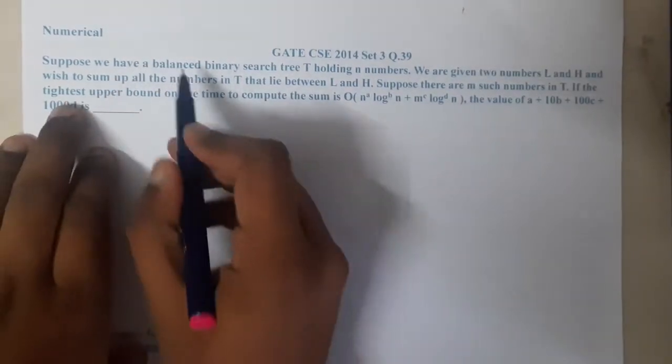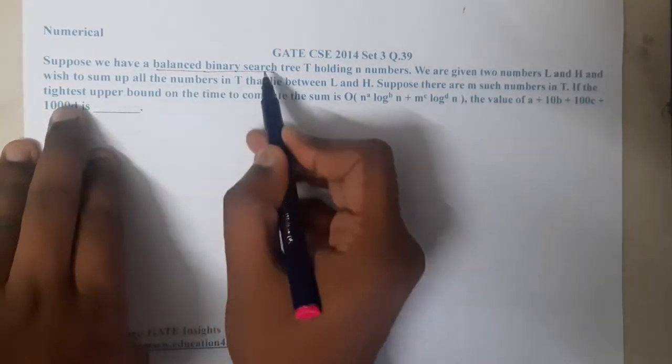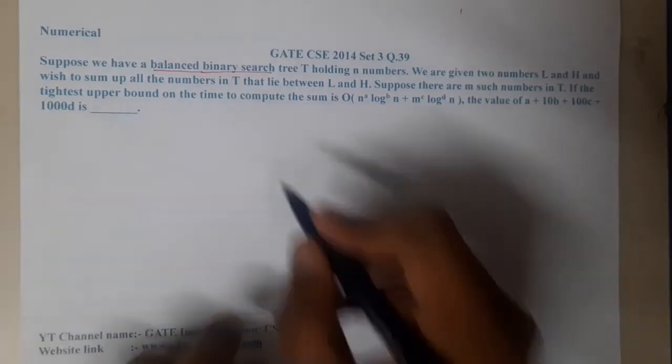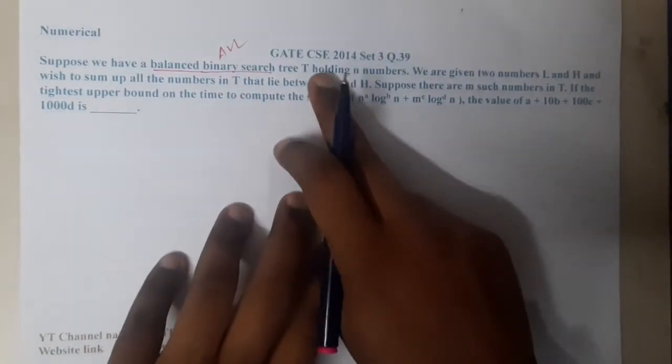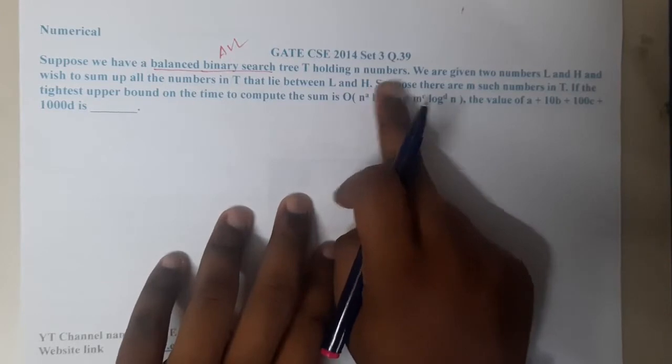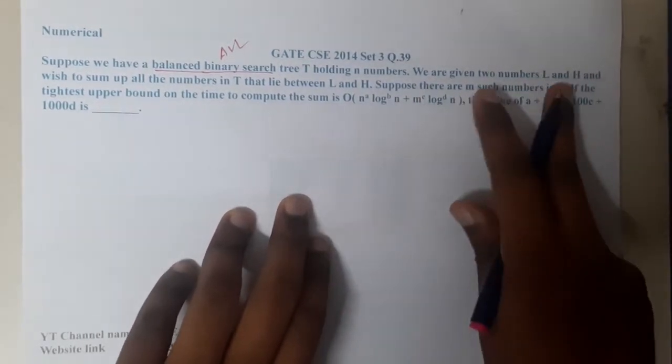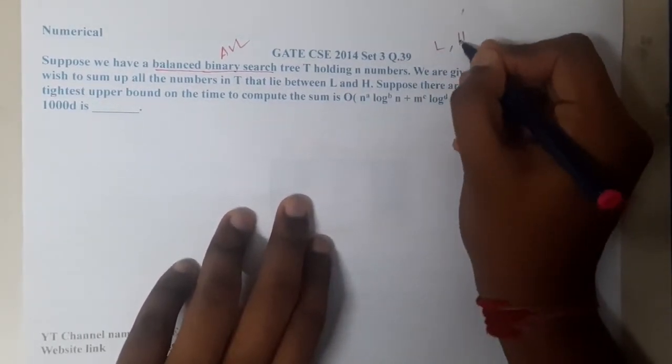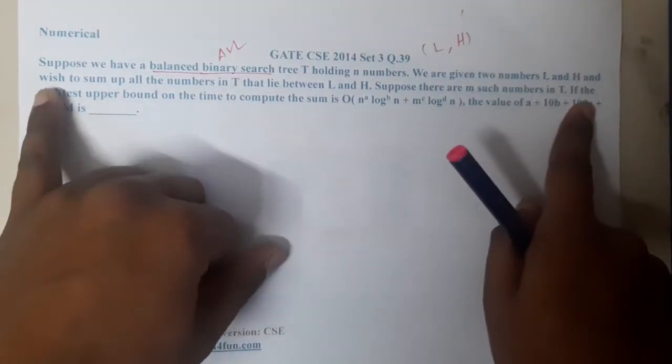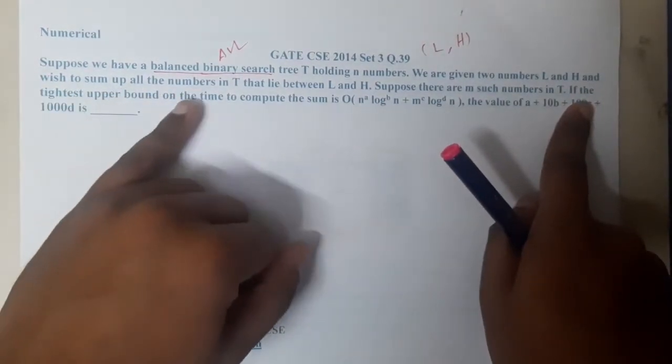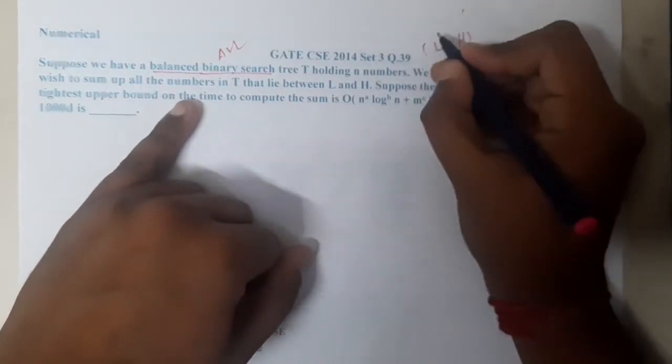Let us go through the question. Suppose we have a balanced binary search tree, completely balanced or indirectly called as an AVL tree. Tree T holding n numbers. We are given two numbers L and H.